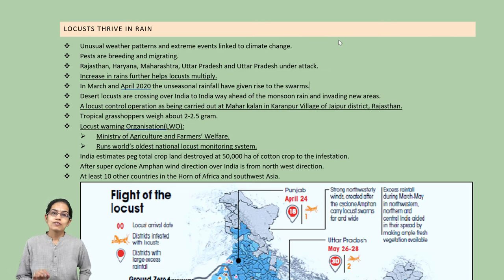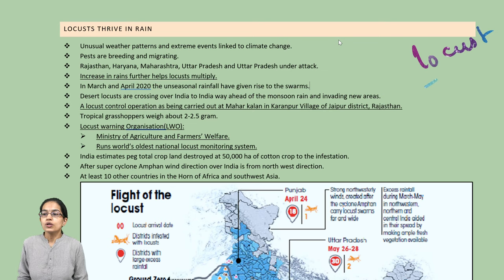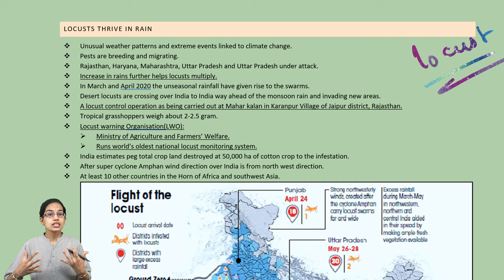This topic focuses mainly on locusts and the population of locusts. Locusts have been affecting India and the various regions of India badly. We have seen a certain increase in the population of locusts with the unusual rainfall that occurred, and that has increased the proportion of locusts.